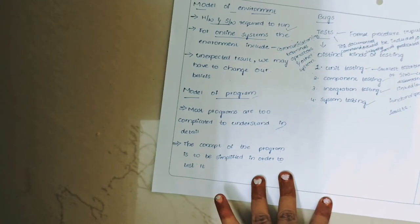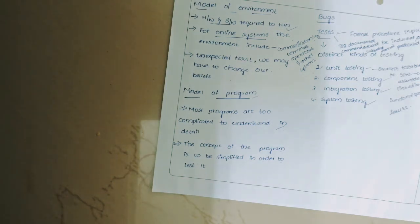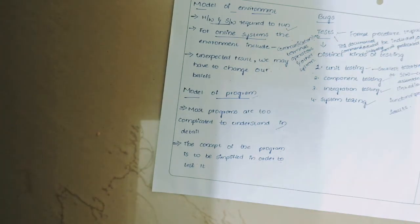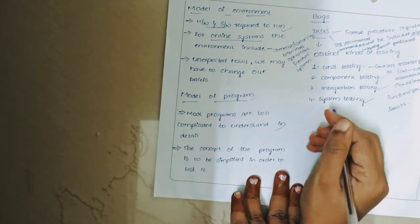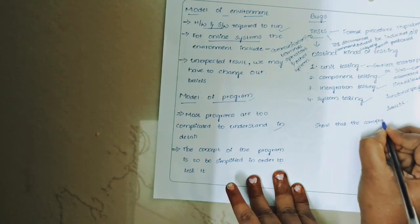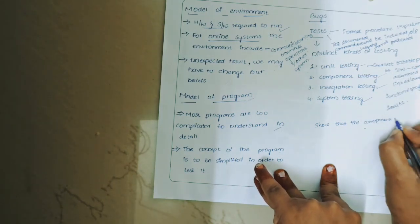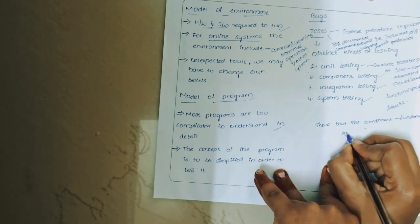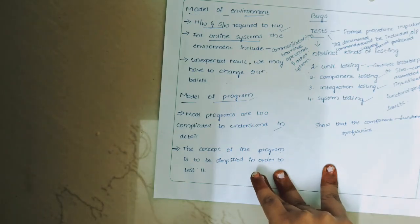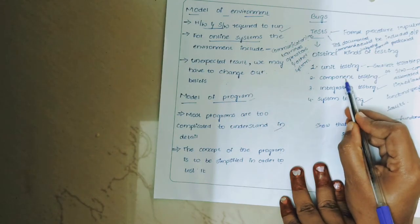A component is an integrated aggregate of one or more units. One or more units combined together form a component, and these components undergo component testing. A unit with subroutines is called a component. Component testing is a test done to show that a component does not satisfy its functional specifications — similar to unit testing, it does not satisfy the functional specification.